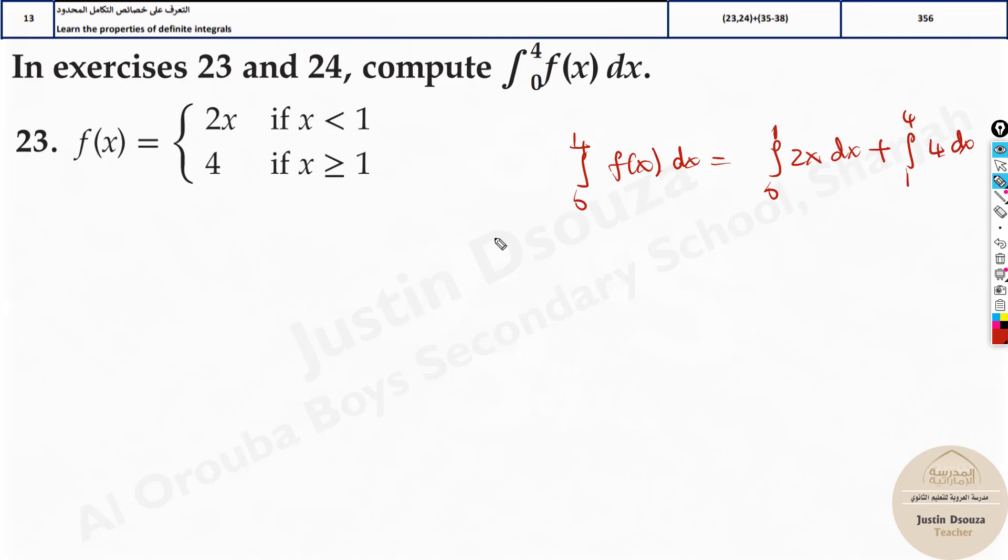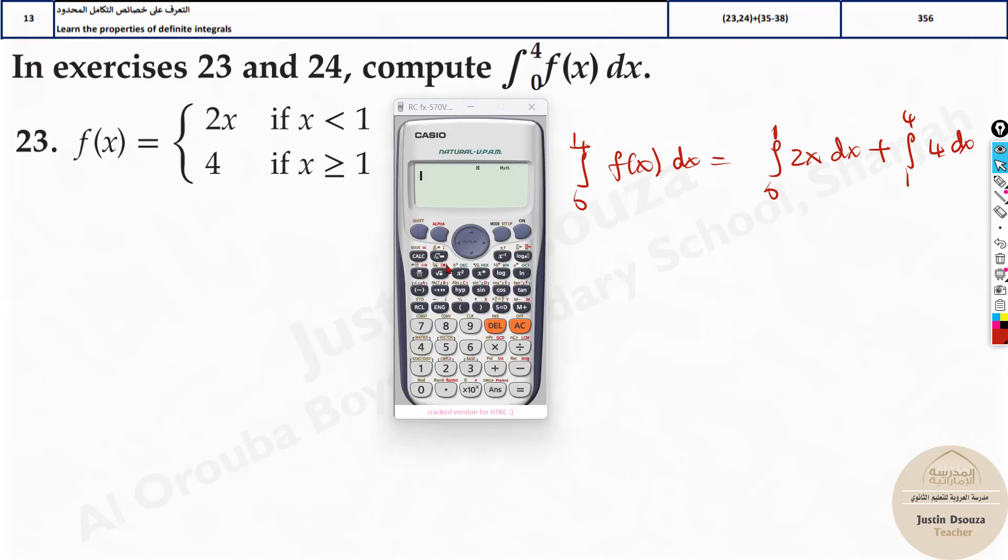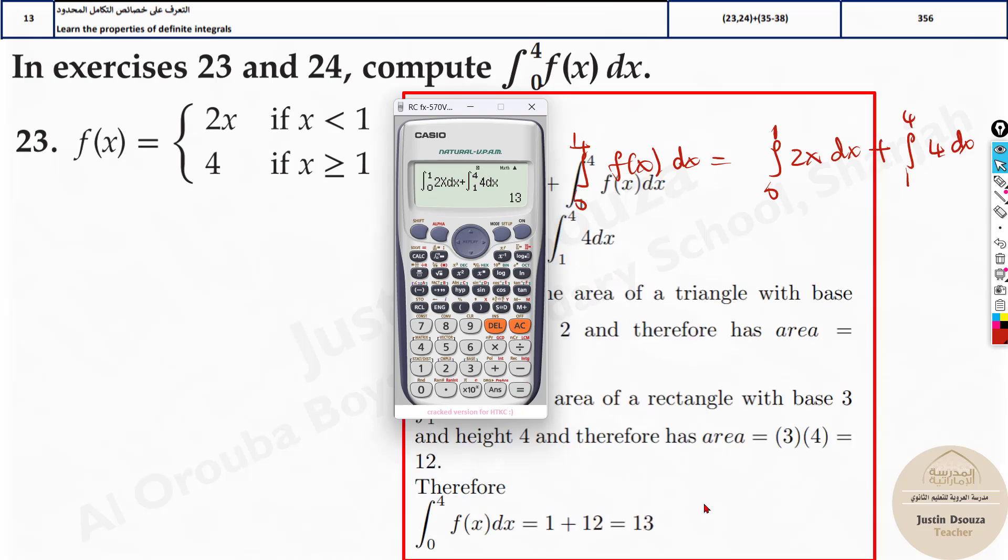Now we can just use the calculator. In the written part we have done the written method using formulas, but now we will just use the calculator and solve it up. Press the definite integral symbol, type 2 alpha x with limits from 0 to 1, press plus, then definite integral 4 from 1 to 4. The answer is 13.